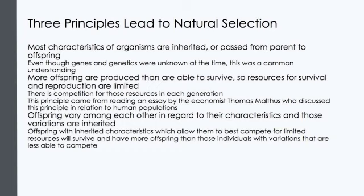Natural selection leads to evolutionary adaptation, that is, a population's increase in the frequency of traits suited to the environment. The term adaptation can also refer to the trait itself. For example, an insect's camouflage is an adaptation that helps it avoid predators. In modern terms, we would say that the genetic composition of the population has changed over time, and that is one way of defining evolution. But we can also use the term evolution on a much grander scale to mean all of biological history, from the earliest microbe to the enormous diversity of organisms that live on the earth today.